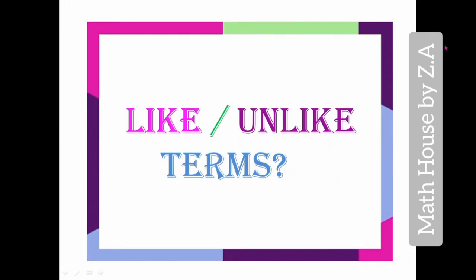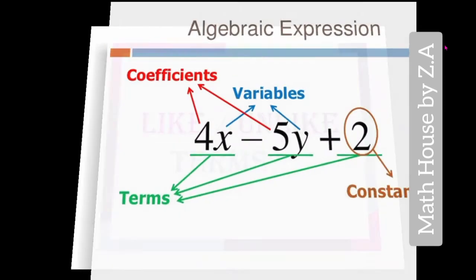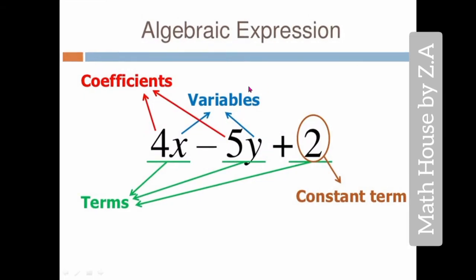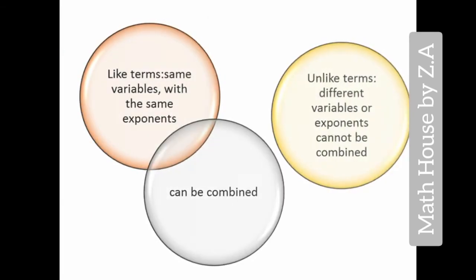Let's learn about like and unlike terms. We call components of algebraic expressions 'terms.' For example, in 4x - 5y + 2, this is an algebraic expression with three terms: 4x, 5y, and 2, connected by two operators. In 4x, 4 is the coefficient and x is the variable. In 5y, 5 is a coefficient and y is a variable. The 2 without any variable is our constant term.